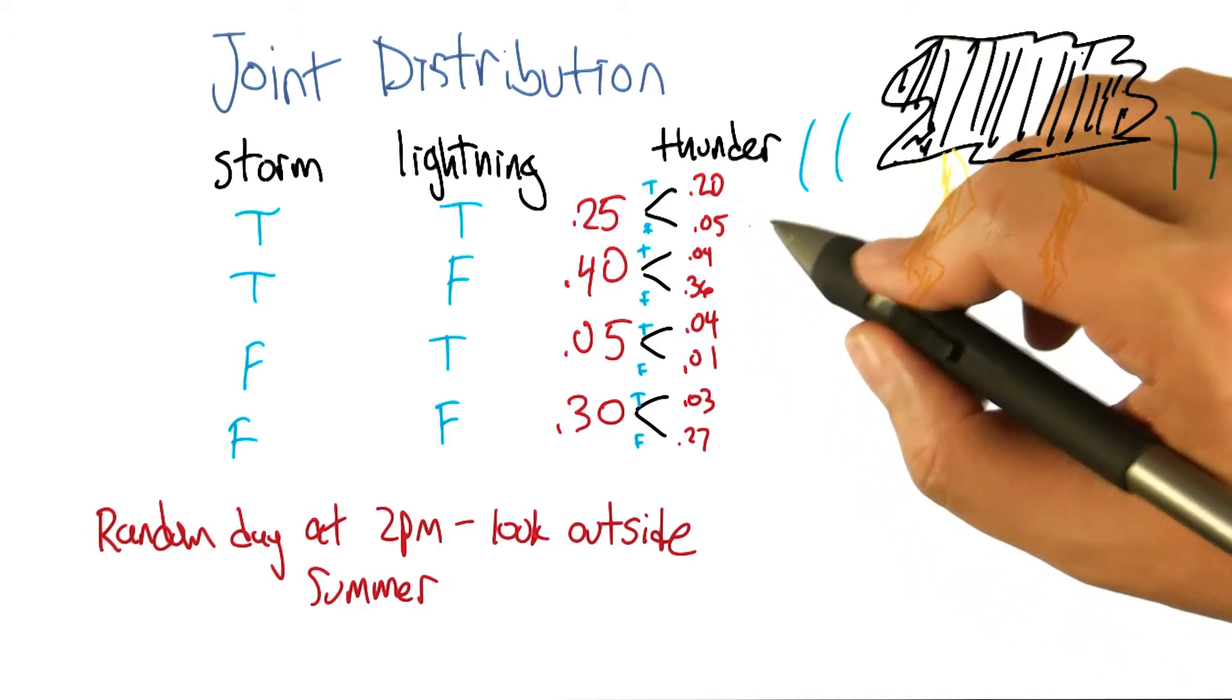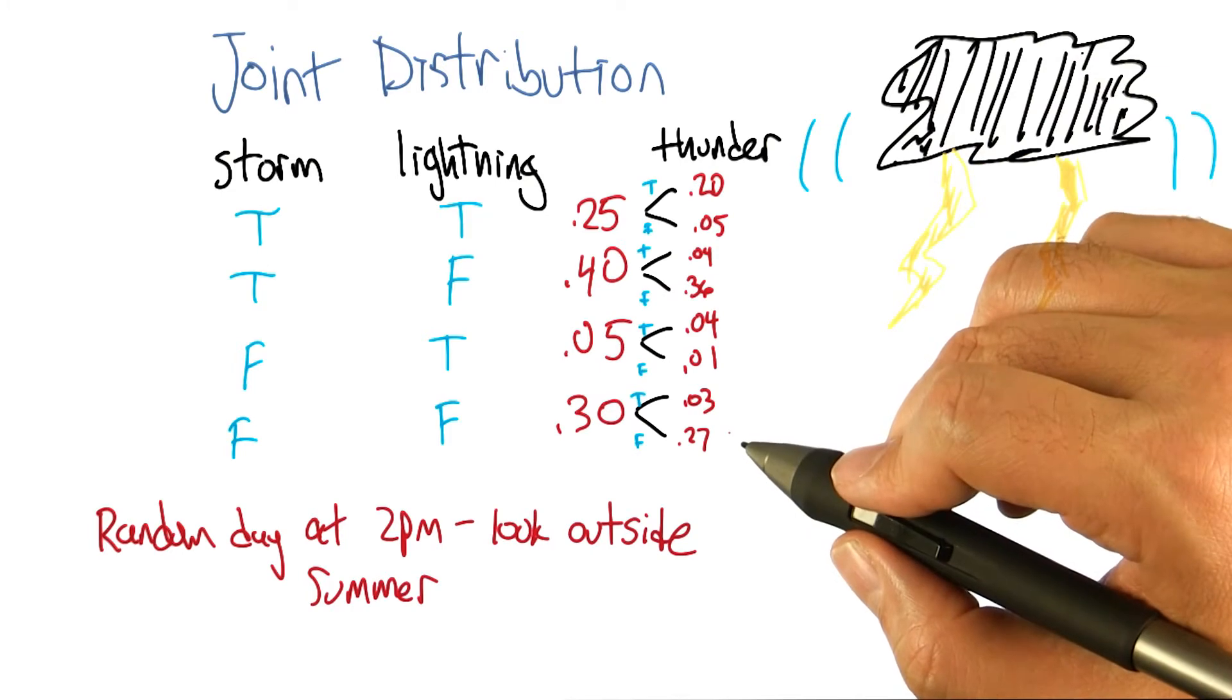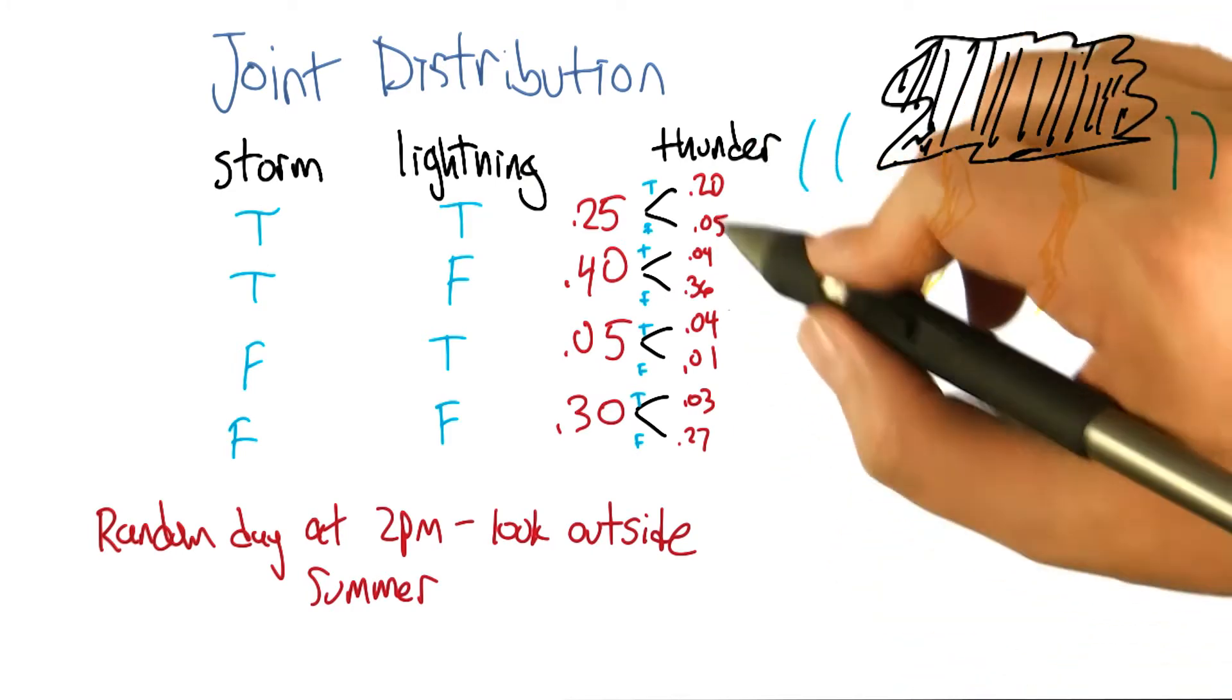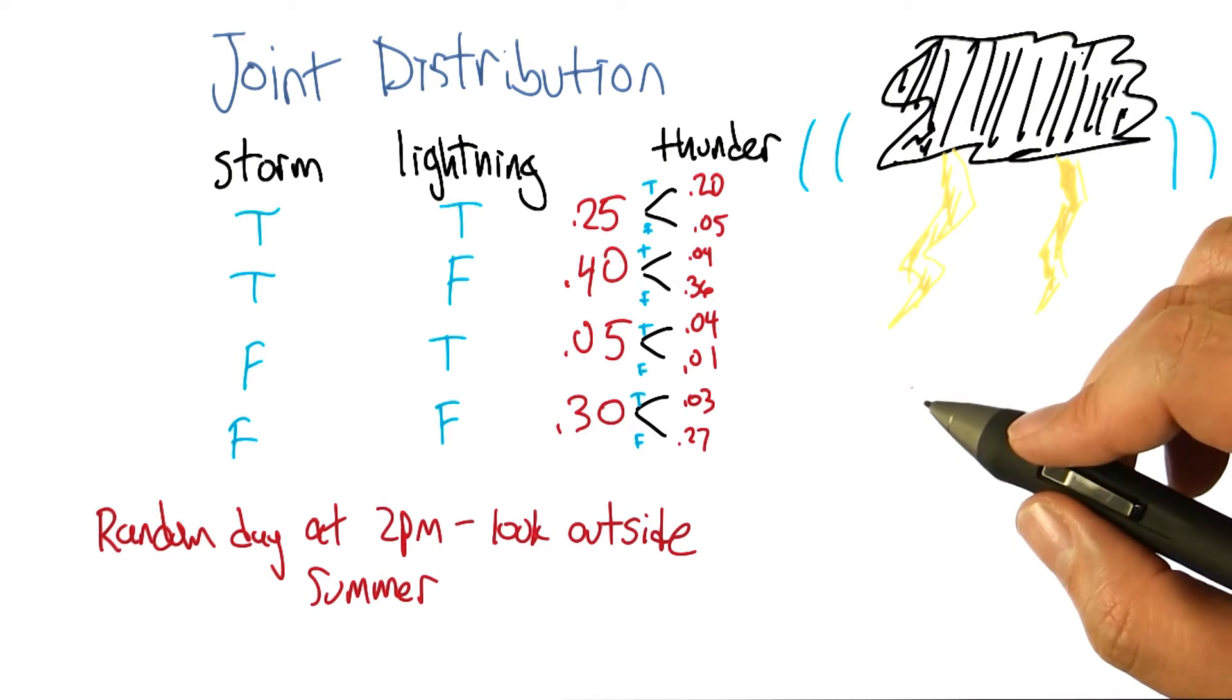Anyway, the point is that one of the things you should notice here is that each time we add one variable, what happens to the number of probabilities that we have to write down? Well, in a world where it's binary, it goes up by a factor of two. Not just two more, but twice as many.